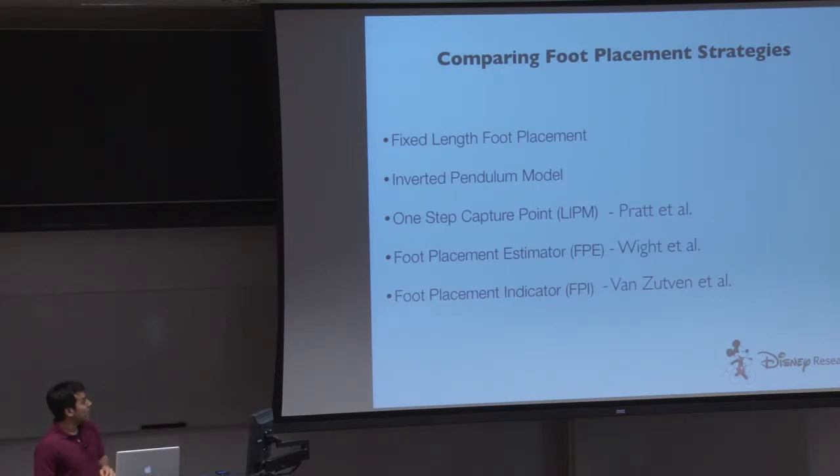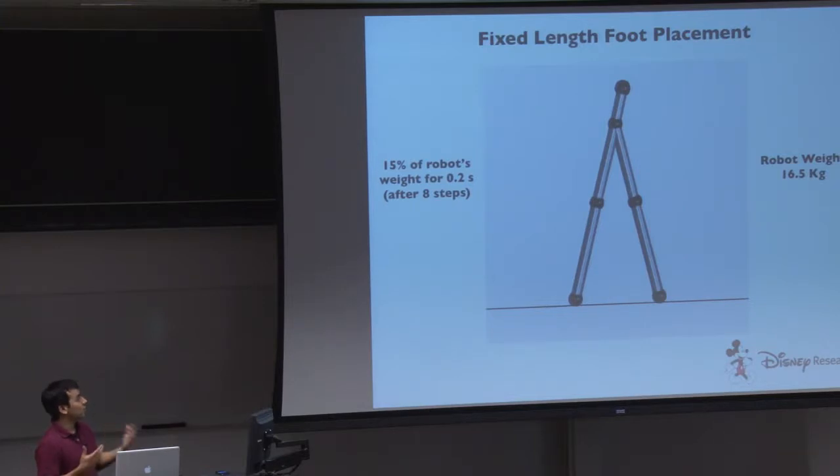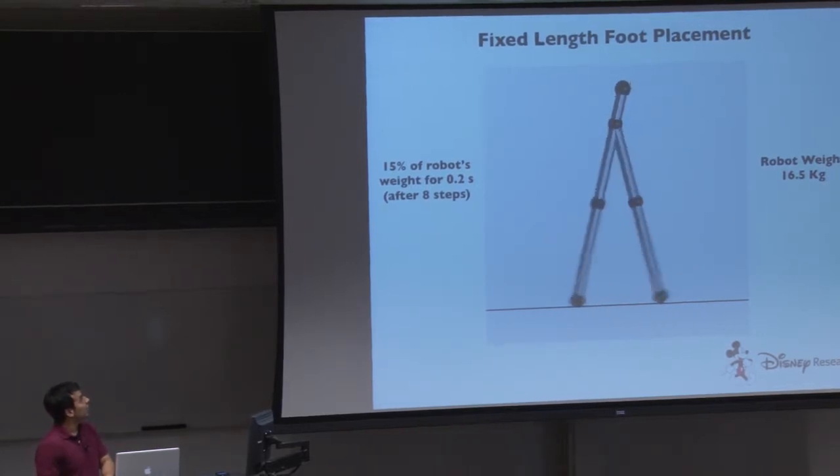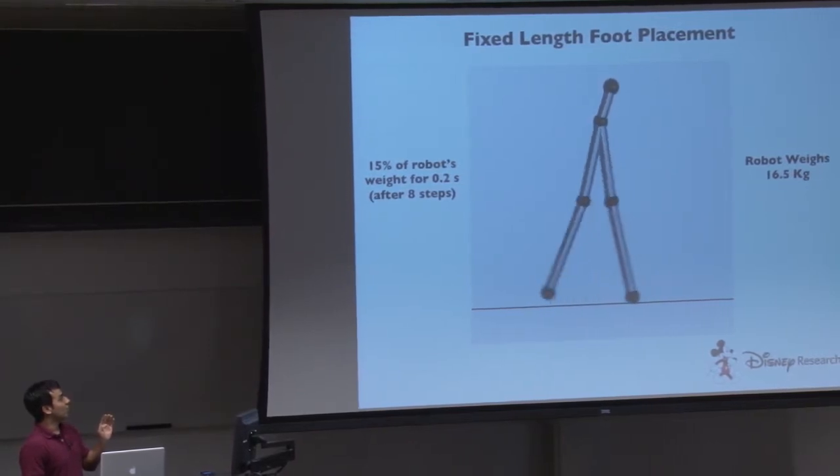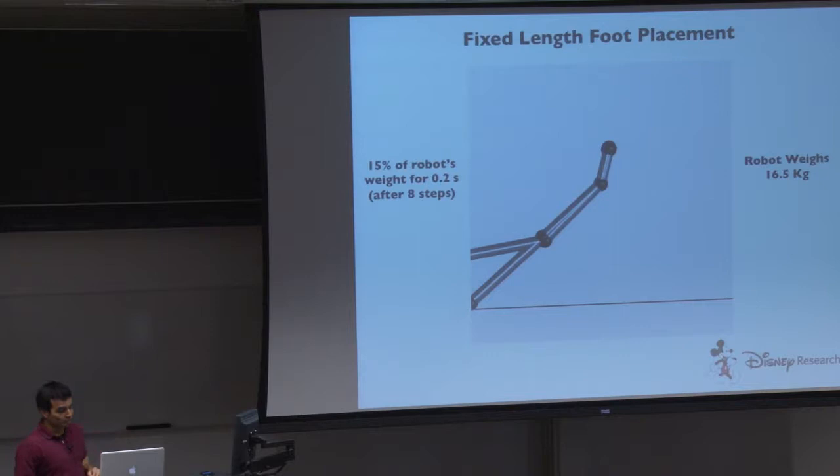So what I did is modeled the robot as best as I could in terms of the physics and actuator limitations and whatnot and started pushing it around in simulation. So what you'll see here is after about eight steps, he's going to get pushed about 15 percent of his weight for about 0.2 seconds. And the idea is to try to quantify sort of the stability of this guy using the gait sensitivity norm with the foot length, foot placement length as the gait indicator. So this is fixed foot placement. It turns out, you know, he actually walks without thinking, without modulating foot placement. But as soon as he gets pushed, he sort of falls over.